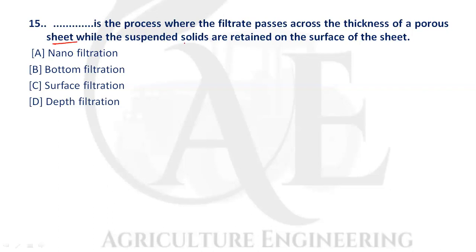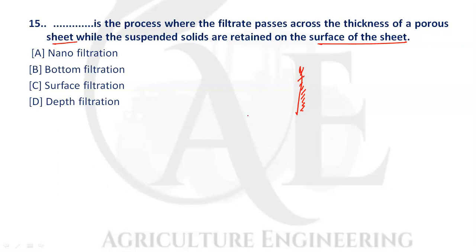Next question: what is the process where the filtrate passes across the thickness of a porous sheet while suspended solids are retained on the surface? This is known as surface filtration. Option C is the correct answer.